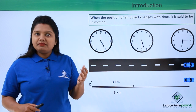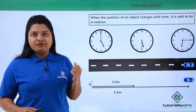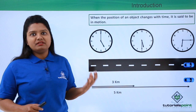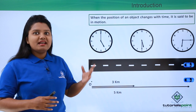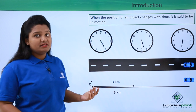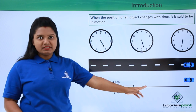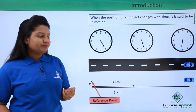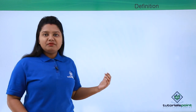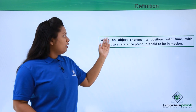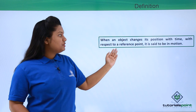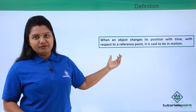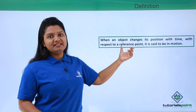Whenever we want to specify the motion or position of an object, we require a point with respect to which we can specify their position or motion. Such a point with respect to which we can specify the position or motion of a body is known as a reference point. Since we considered point O, with respect to which we observed the motion and position of the car, point O is our reference point. We now define motion as: when an object changes its position with time with respect to a reference point, it is said to be in motion.